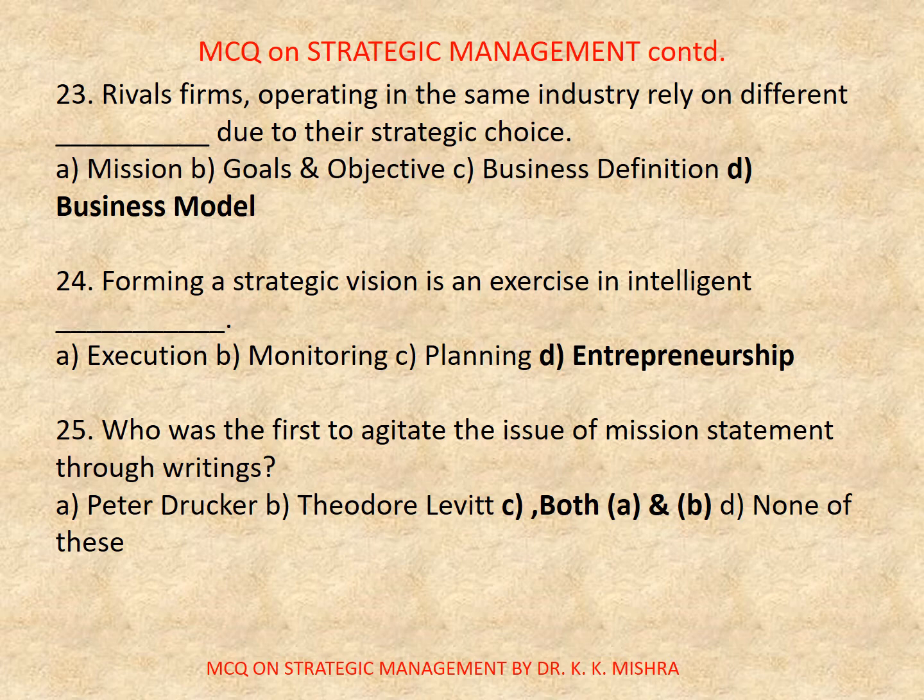Question number 23. Rival firms operating in the same industry rely on different tasks due to their strategic choice: A. Mission, B. Goals and objectives, C. Business definition, D. Business model. Correct option is D. Business model. Question number 24. Forming a strategic vision is an exercise in: A. Execution, B. Monitoring, C. Planning, D. Entrepreneurship. Correct option is D. Entrepreneurship. Question number 25. Who was the first to agitate the issue of mission statement through writings? A. Peter Drucker, B. Theodore Levitt, C. Both A and B, D. None of the above. Correct option is C. Both A and B.